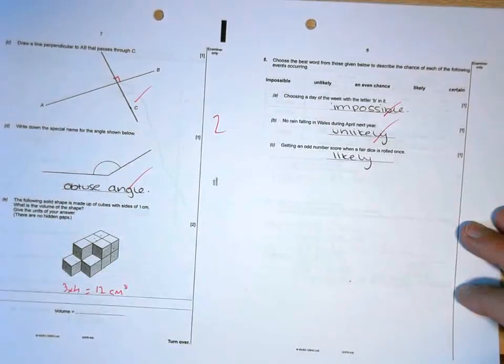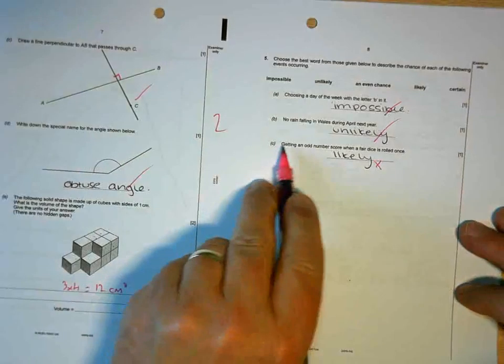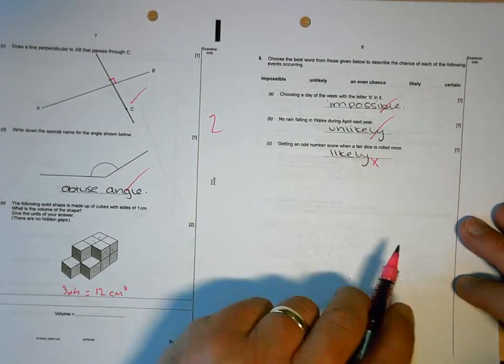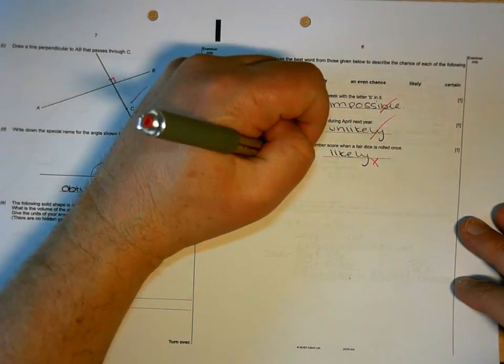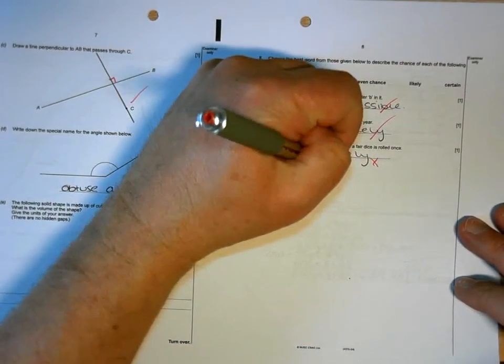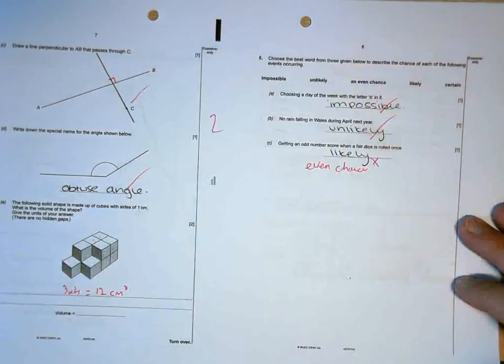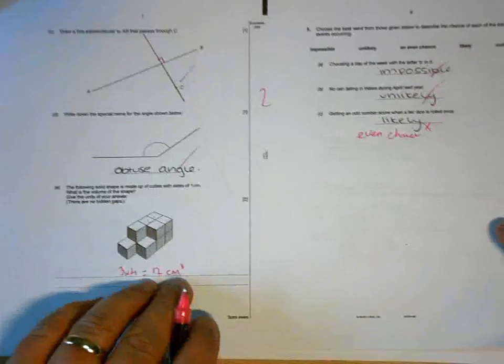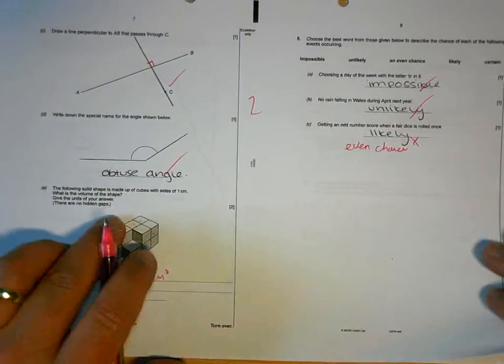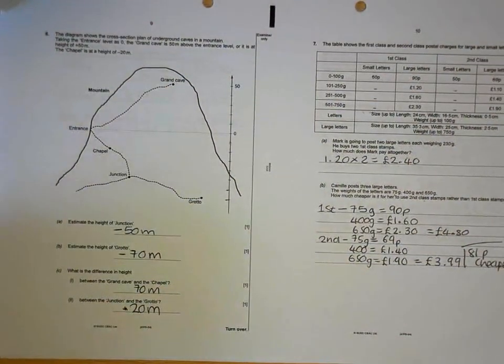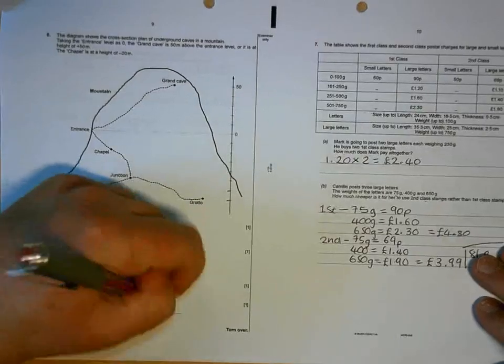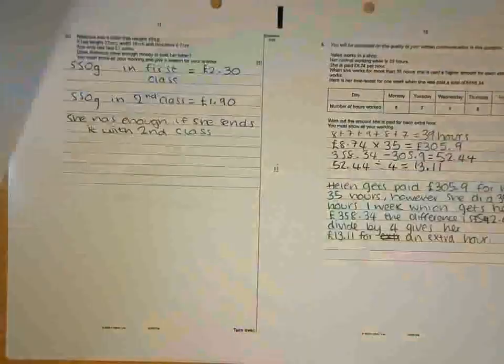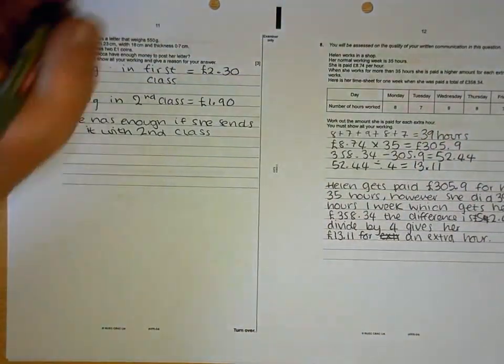Impossible, unlikely. This one is even. The number of odd numbers is exactly the same on a fair dice as the number of even numbers. So it's an even chance, is what they're looking for there. So 4 marks on that page. So there's things there that you've got wrong that really you should be able to get right. That's good. So that's a good page. 9 marks.